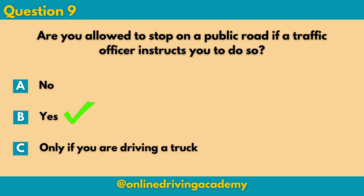Let's say you are driving on a road and the road sign tells you not to stop, or the road sign tells you you cannot make a U-turn. However, there is a traffic officer there who instructs you to make a U-turn. You have to ignore that sign and listen to the traffic officer and make a U-turn.